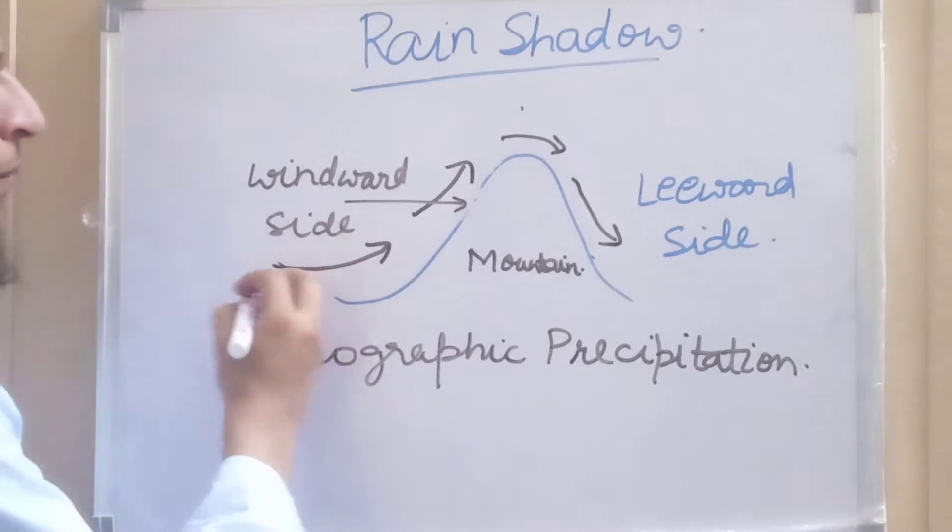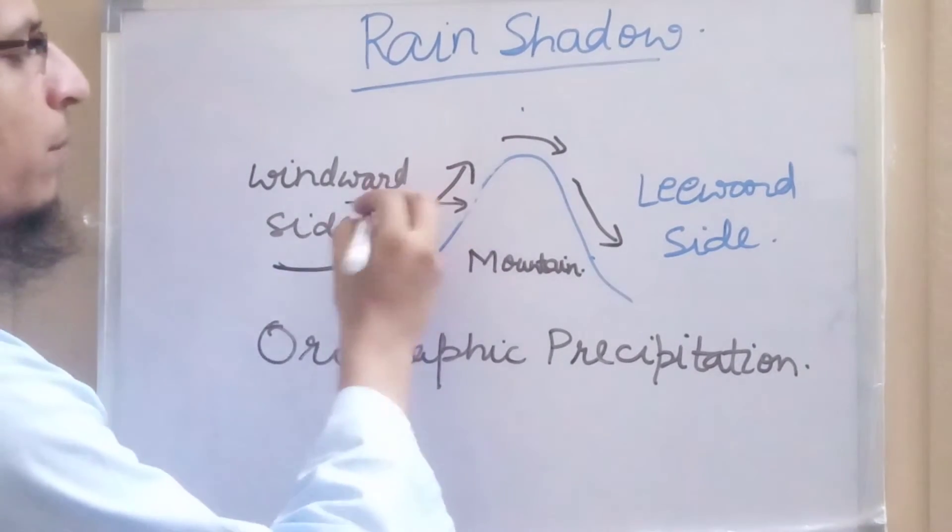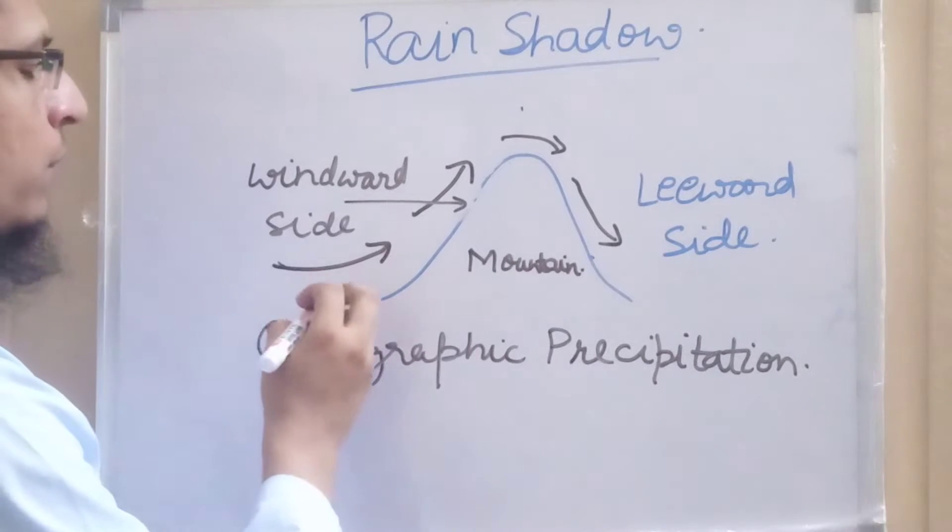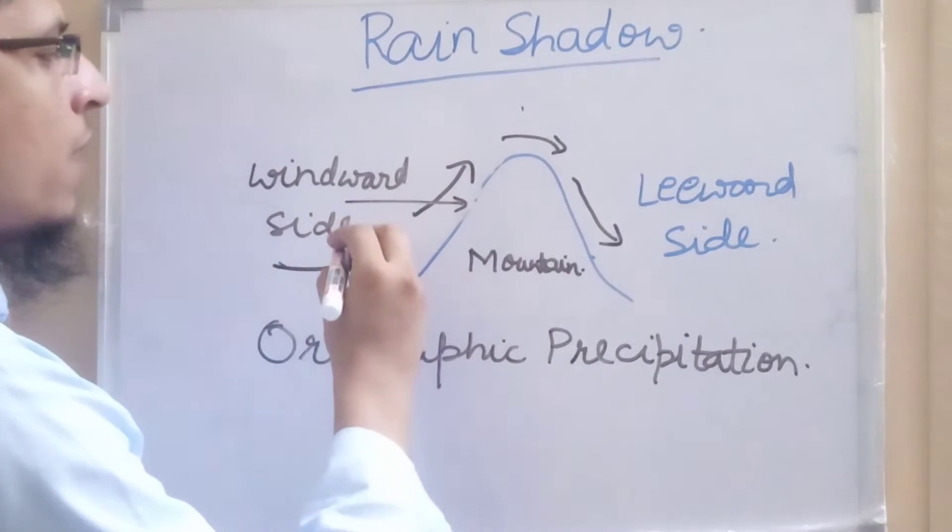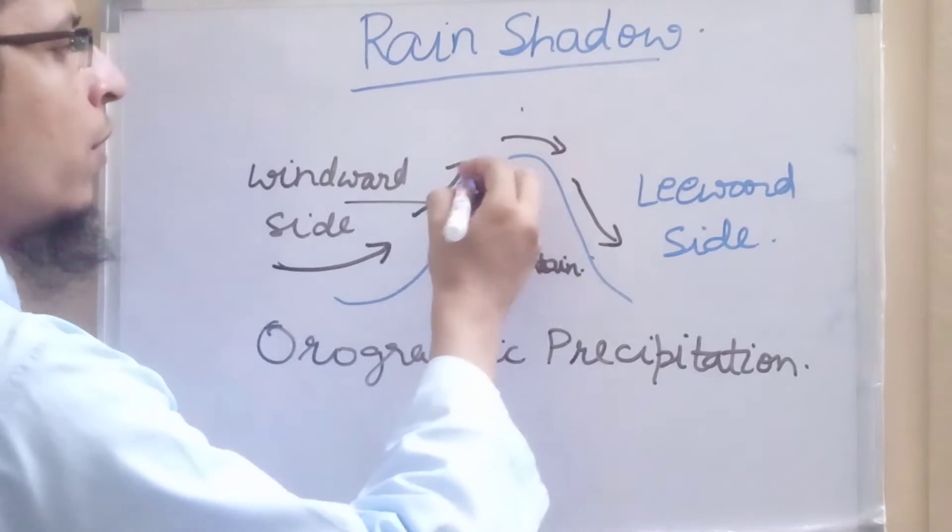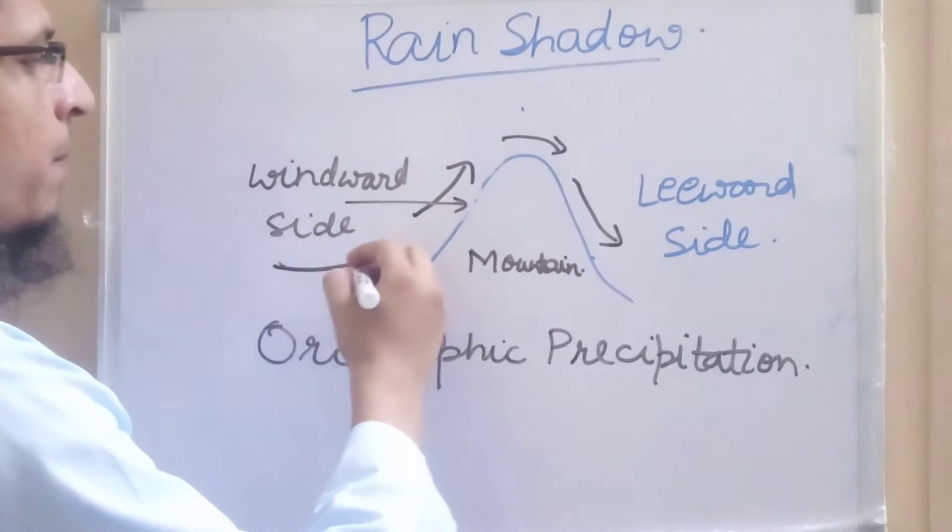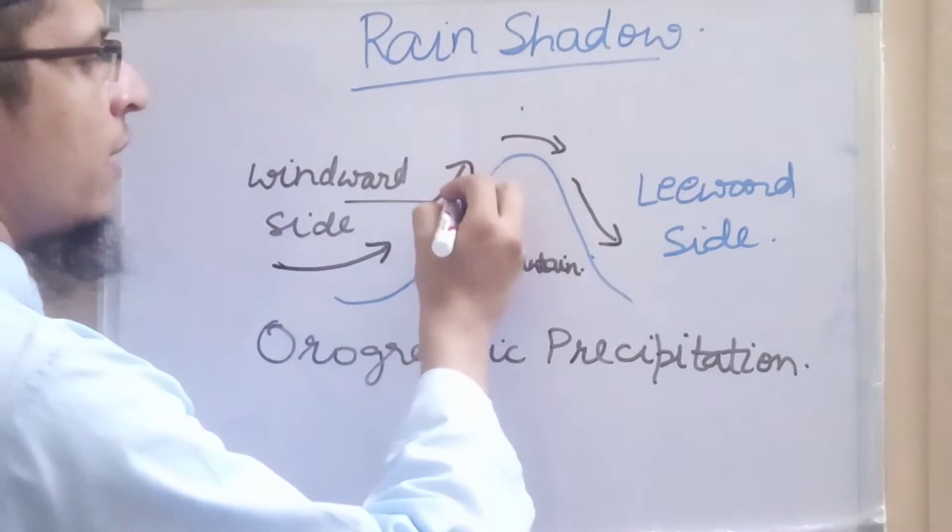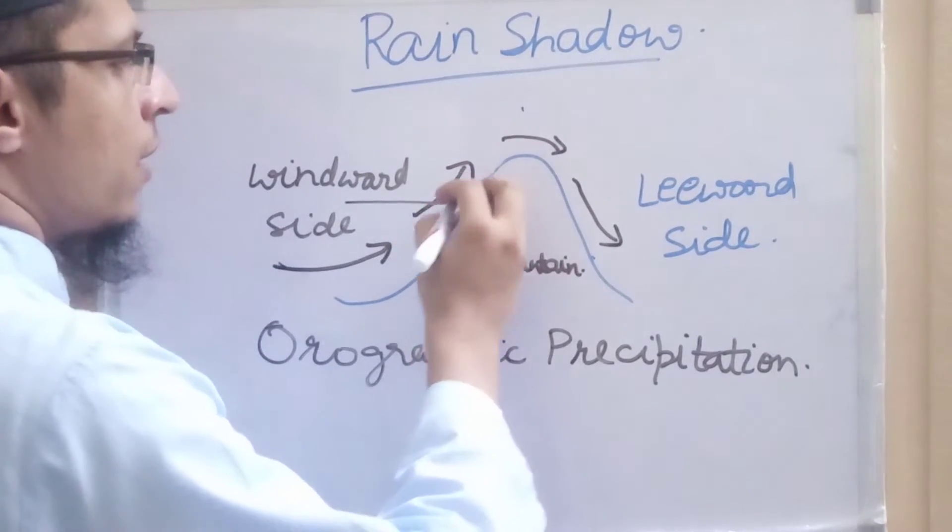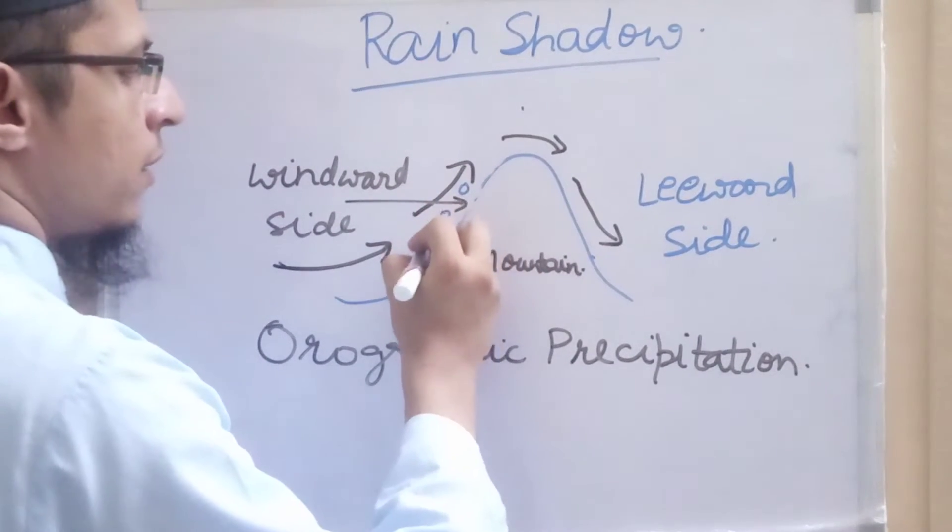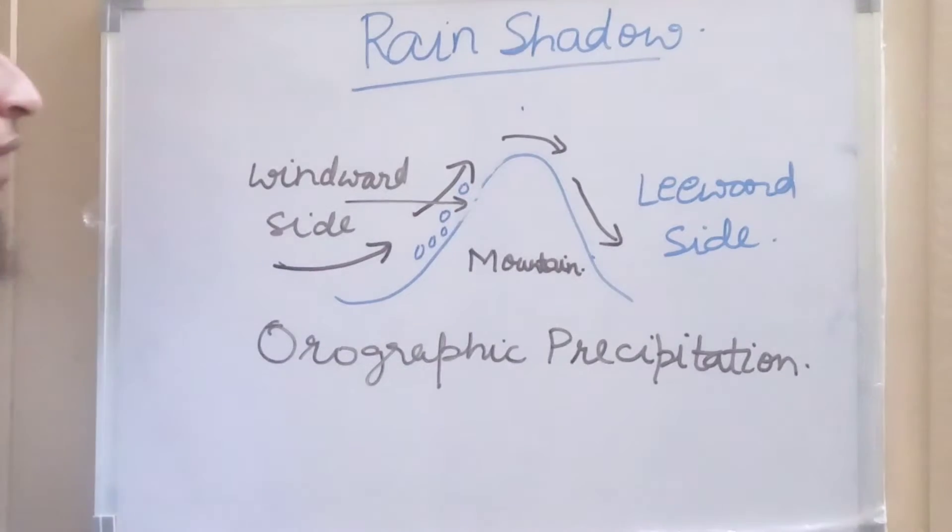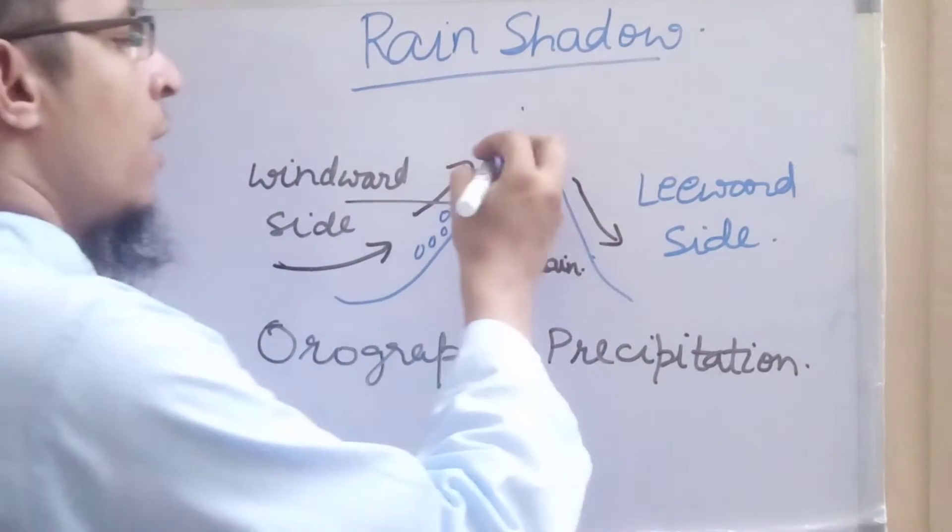When the wind is blowing from this side, it is carrying some moisture with it. As we know, warmer air rises up and it gets condensed. So when this warmer air is moving up in the upward direction, it is getting condensed, and due to condensation, there is rainfall on this side.